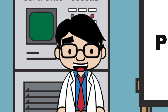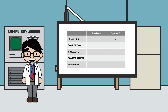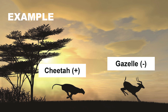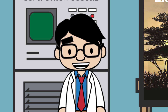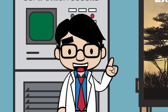Let's start with predation, which is when one species benefits by eating another species. In this case, species A gets a benefit and species B suffers the consequence. An example of predation is the interaction between a cheetah and a gazelle, where the cheetah gains energy by eating the gazelle, and the gazelle loses — it kind of gets eaten, and that's pretty bad.